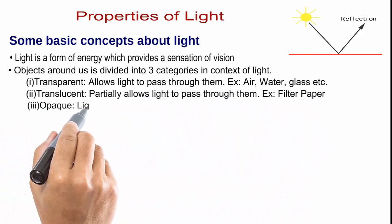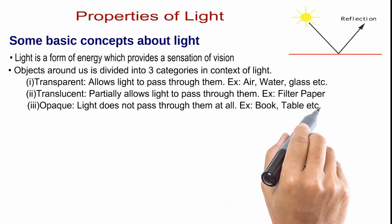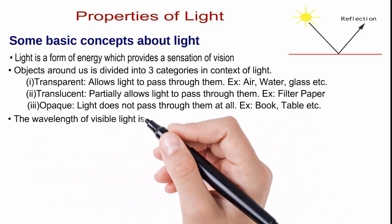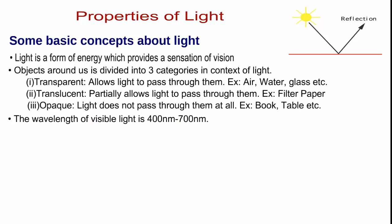Objects around us is divided into three categories in context of light. Transparent allows light to pass through them, for example air, water, glass.